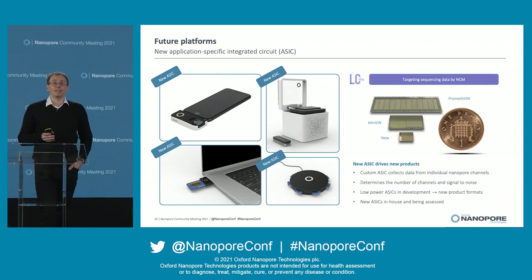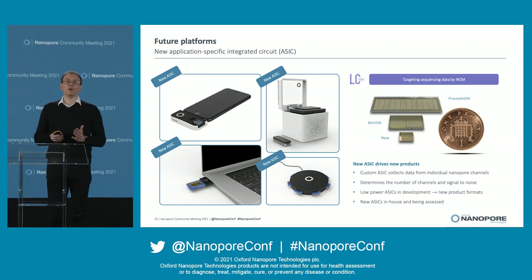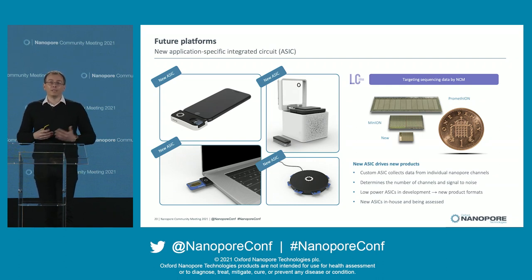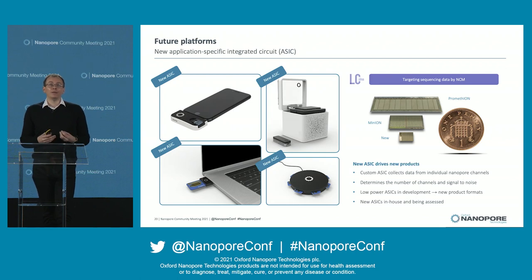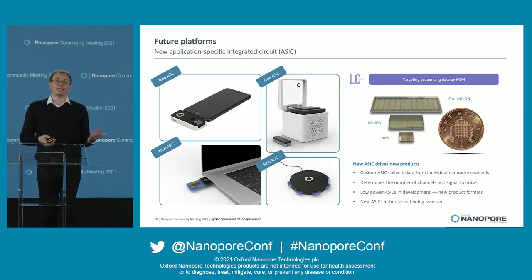So this is our new ASIC. It's very small, very cheap, it has 400 channels, it's in one die — so all 400 channels up front, all in one. It's very low power, and that means it enables a lot of future product concepts that you've heard Clive talk about before. That low power also means the instruments can be really simple, and we can use power from devices such as USB to power our sequencing devices.